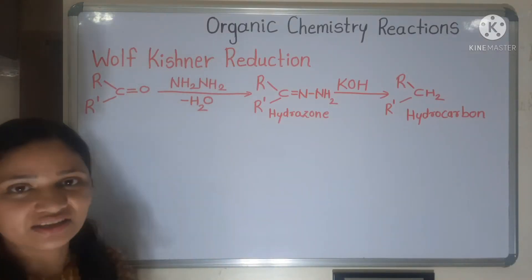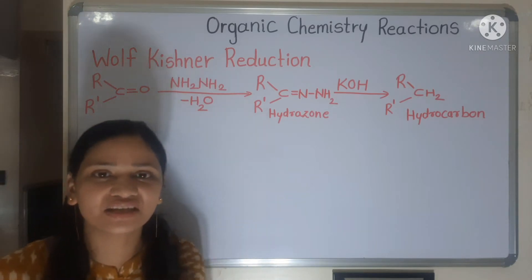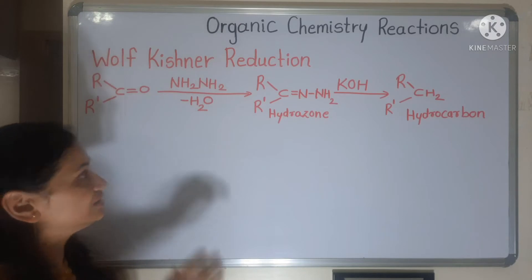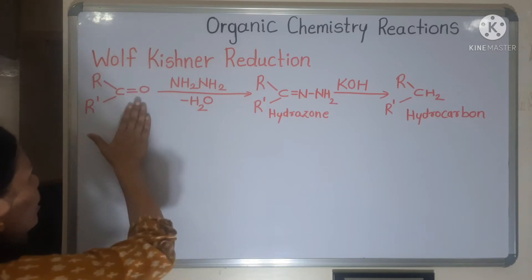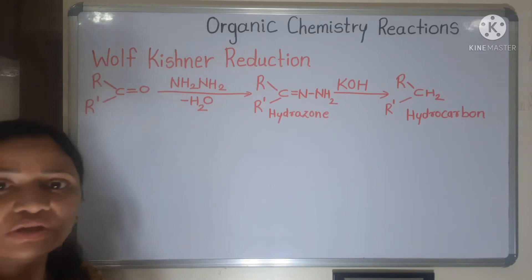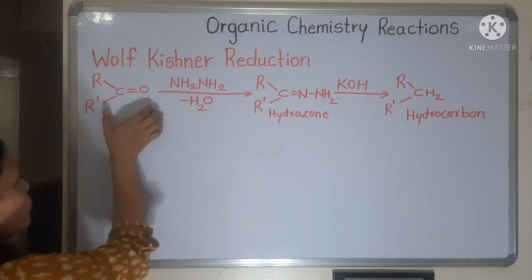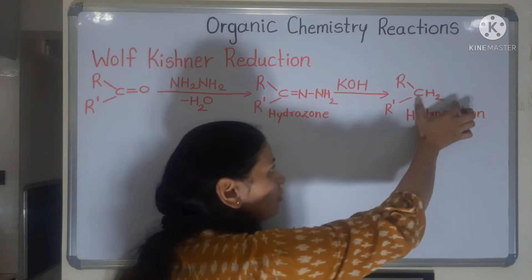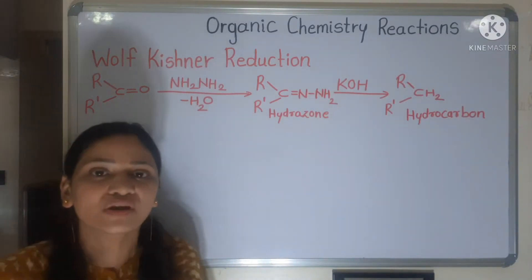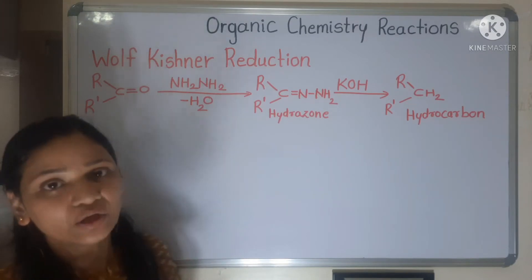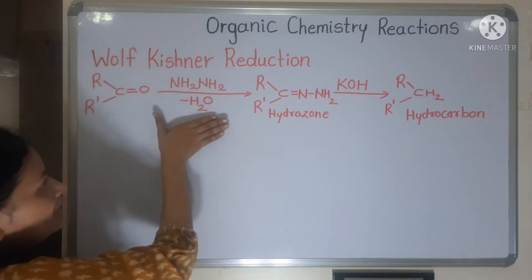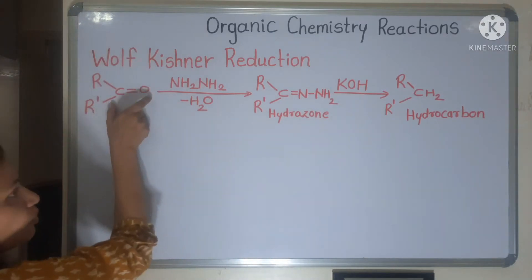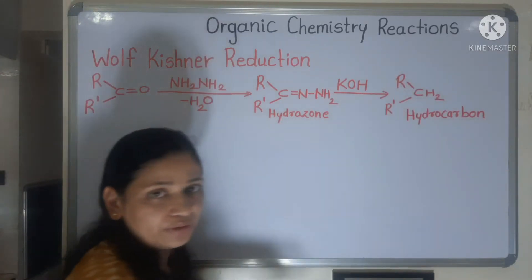Wolf-Kishner reduction reaction: your carbonyl group — that is ketone or aldehyde — gets converted into a particular hydrocarbon in the presence of NH2NH2 and KOH, that is alkali. So hydrazine and alkali convert your carbonyl group into hydrocarbon.